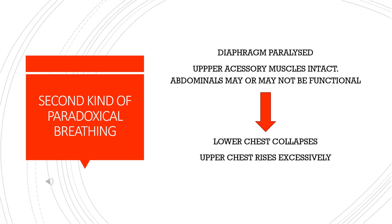The second type of paradoxical breathing occurs when there is diaphragm paralysis while the upper accessory muscles are still intact. The abdominal muscles may or may not be functional. The seesaw action here is the opposite motion of the one described earlier. With this type of paradoxical breathing, the abdomen draws inward during inspiration and the upper chest rises as the upper accessory muscles contract.